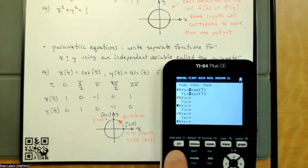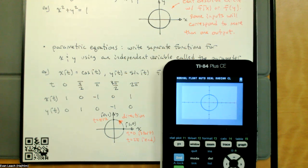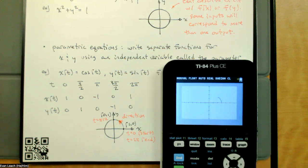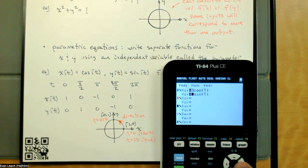If we increase the amplitudes of our sines and cosines, that will increase the radius of our circle - so there's a bigger circle. Then we could start messing with things: if we want to make an ellipse, we just change the amplitudes to different values. An ellipse is just a circle where the horizontal and vertical distances are different. A circle is an ellipse where the horizontal and vertical distances are the same - a circle is kind of a boring ellipse.